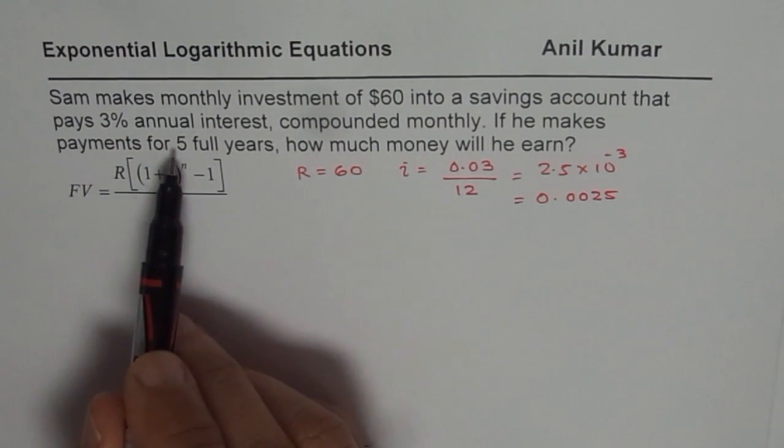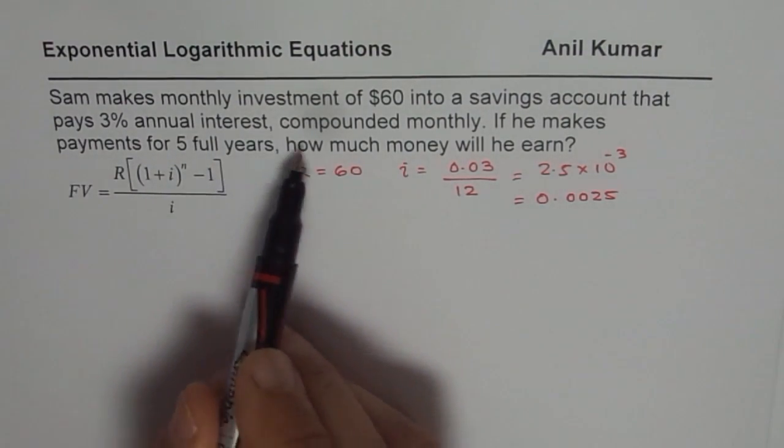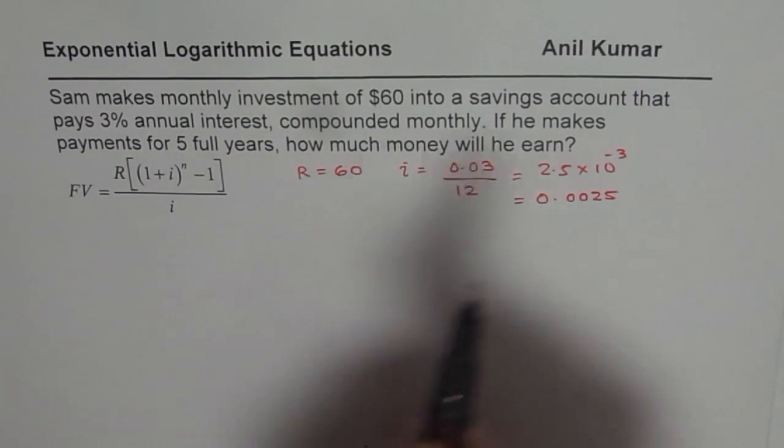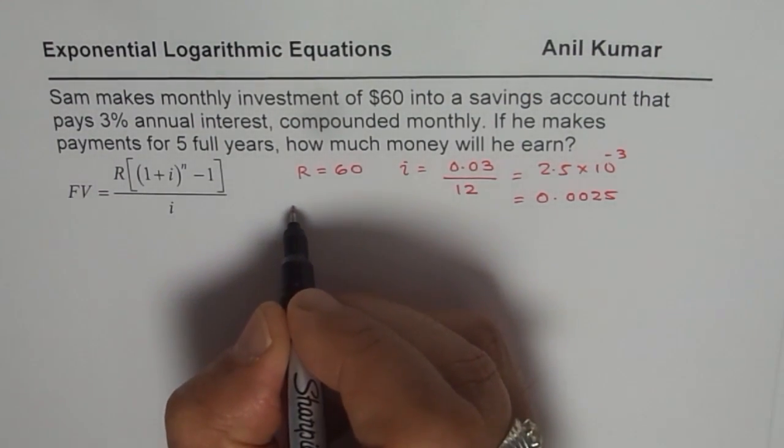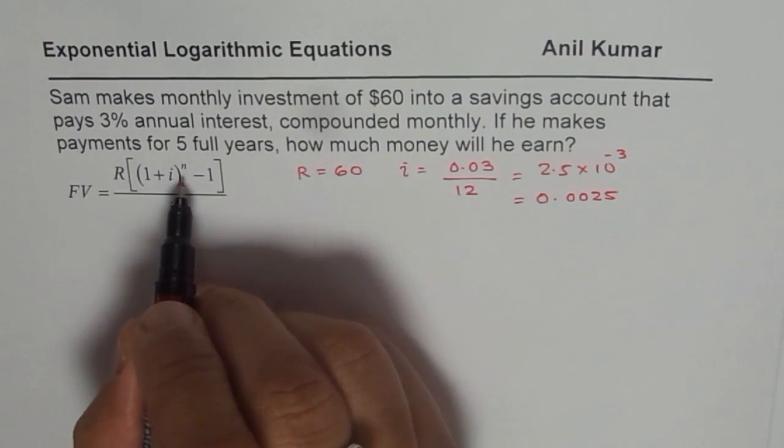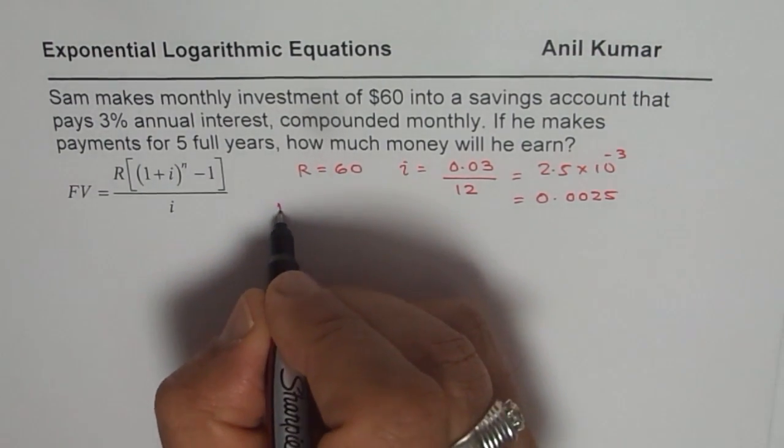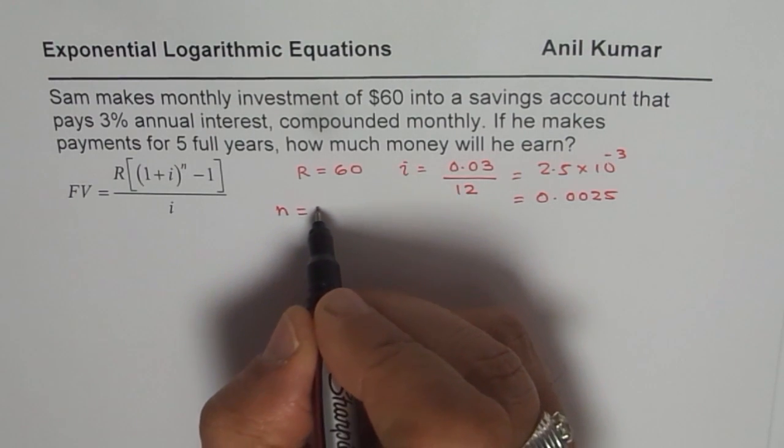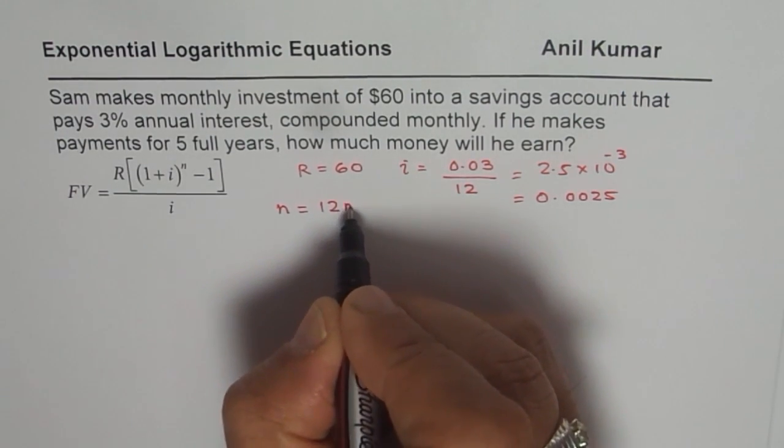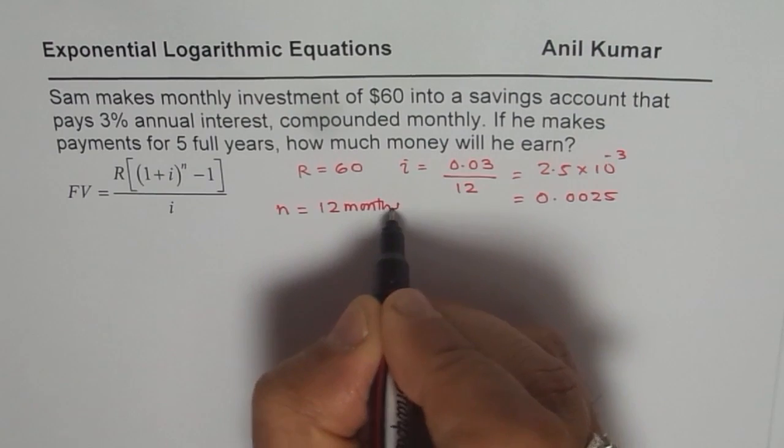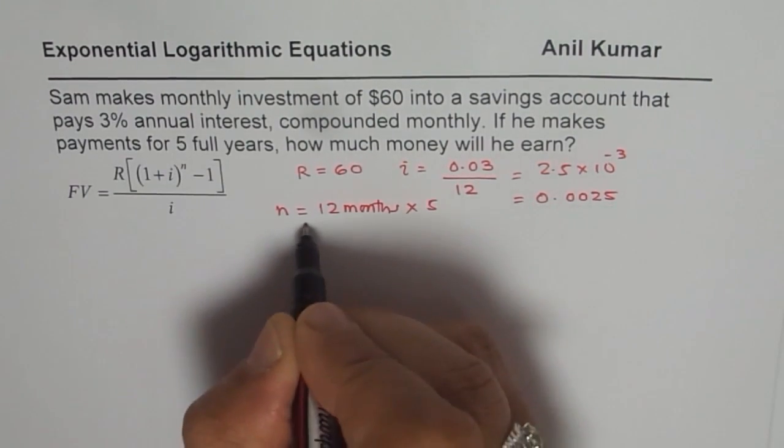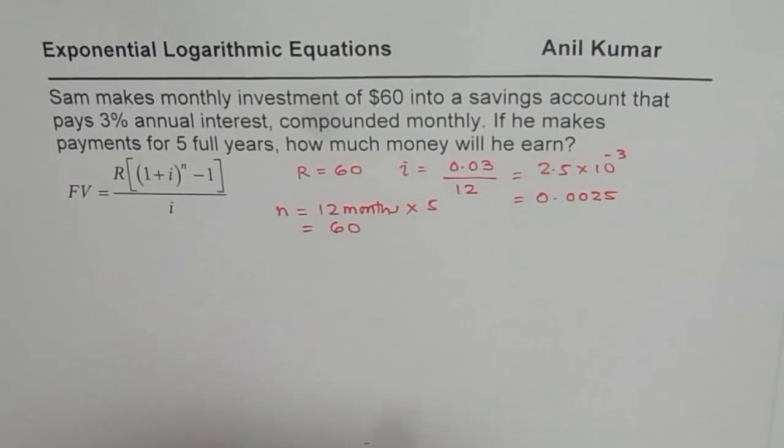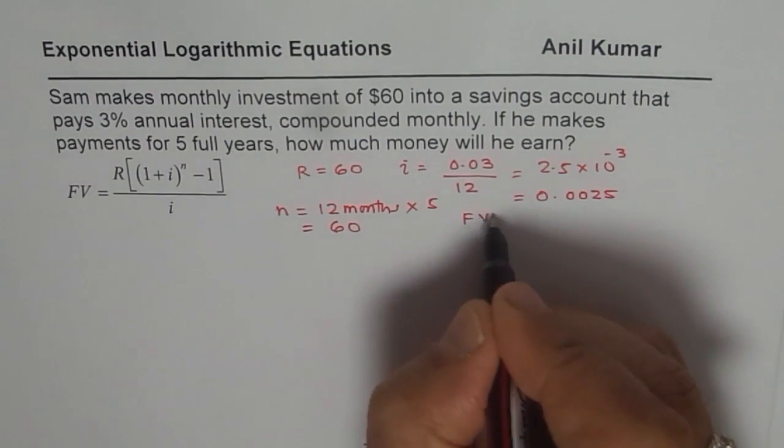If he makes payments for 5 full years, that data is in months, so 5 years means the number of installments N will be 12 months times 5, and that equals 60. So N equals 60 for us and we need to find the future value.